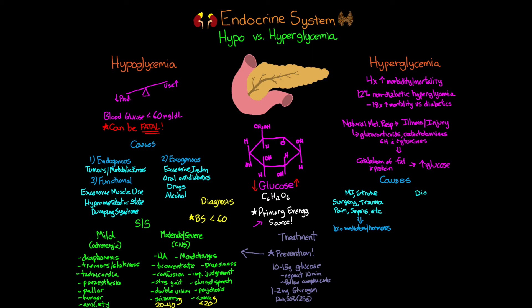The other major cause of hyperglycemia is diabetes, which is the fourth most common comorbidity we encounter. Diabetes involves inadequate uptake of glucose by the body's cells, leading to hyperglycemia. Type 1 diabetes involves impaired production or secretion of insulin by pancreatic beta cells, while type 2 diabetes involves a lack of sensitivity of insulin receptors. Though the causes differ, both ultimately result in the inability of cells to uptake glucose for metabolism.